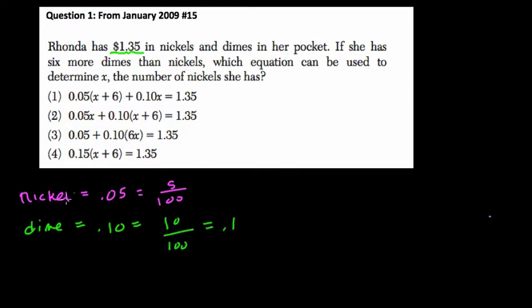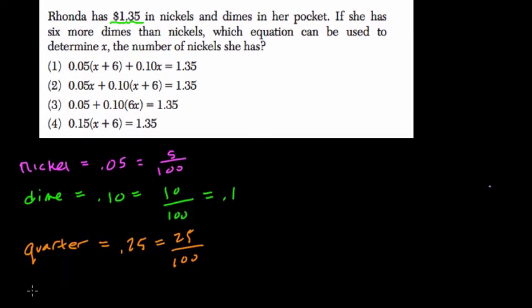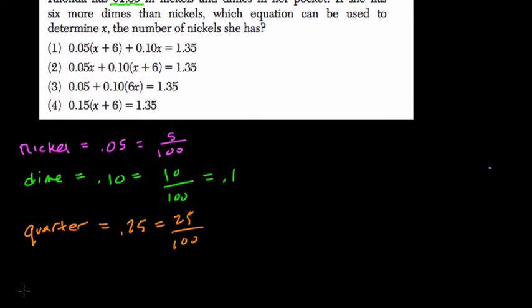Now, we can keep going. Let's just, for fun, do some other common coins. What would a quarter be, Tim? A quarter is .25. And what's left? The penny and the dollar.